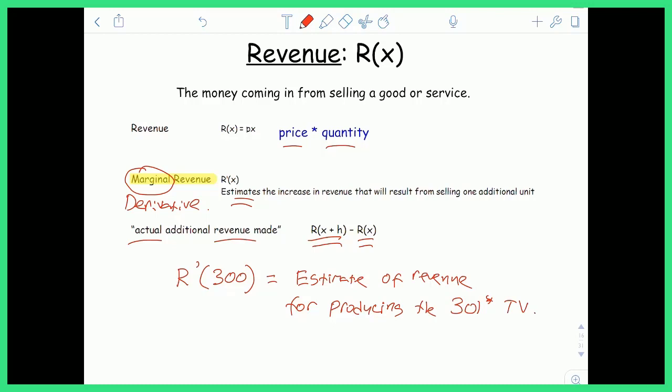So by plugging 300 in the derivative, you're getting an estimation of the revenue increase or decrease. Hopefully it's an increase, it's positive, it's an increase. It's negative, it's a decrease in revenue of producing that 301st TV.